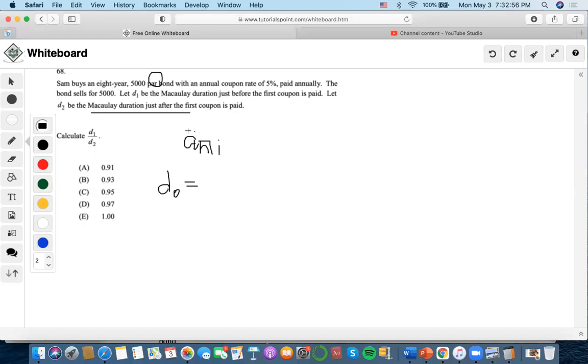Anyway, for this one, it says Sam buys an 8-year bond, so now we could use the annuity due of 5% in 8 years. So now let's calculate this. I'll just get rid of the annuity due and multiply by 1.05.